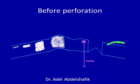Complications of corneal ulcer can be classified into those before perforation and those after perforation. Before perforation, a corneal ulcer can result in opacity. Opacity can be minimal or extensive depending on the depth of the ulcer. A faint opacity is known as nebula, a dense opacity is known as leukoma, and in between we have a macula.